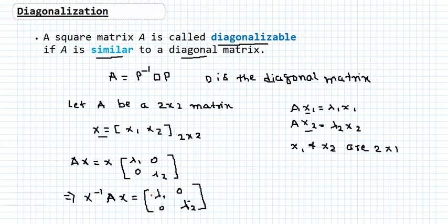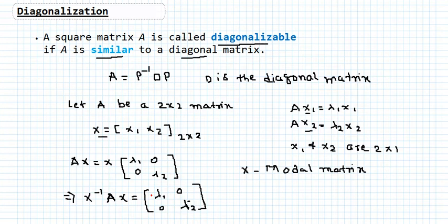That is why the matrix X is very important. This matrix X is called the modal matrix — remember that name. The matrix formed by placing eigenvectors of A as each column, when X is an invertible matrix, is called the modal matrix. The matrix X is invertible if and only if the columns x1 and x2 are linearly independent.